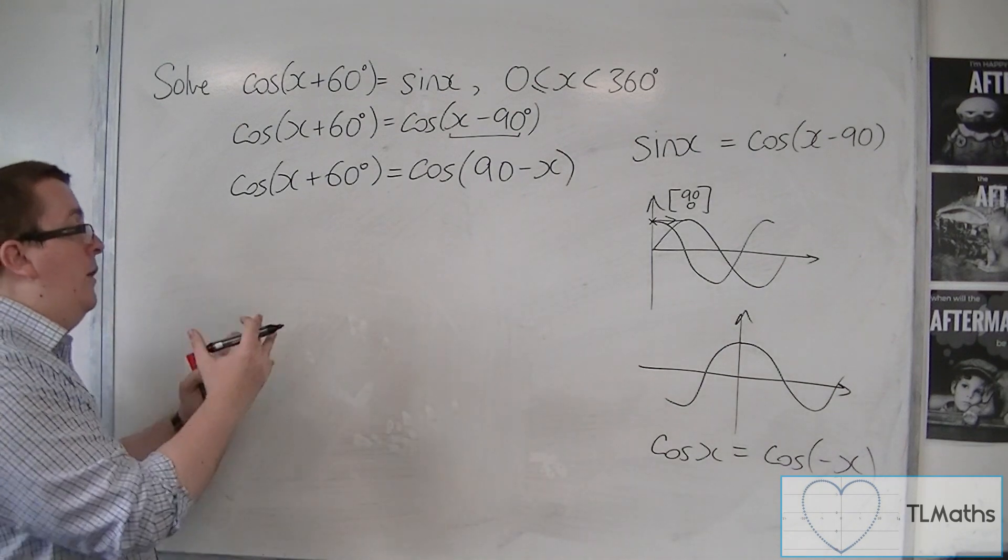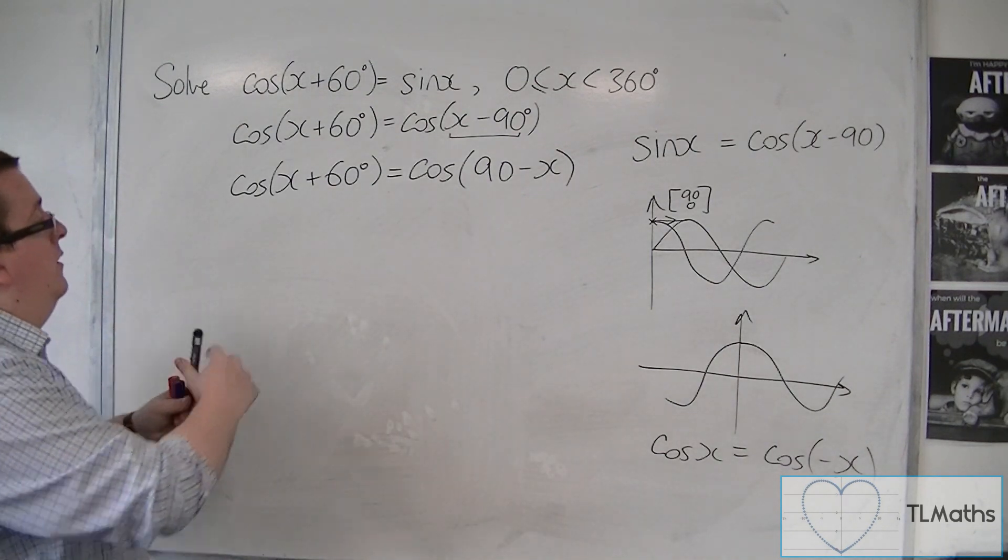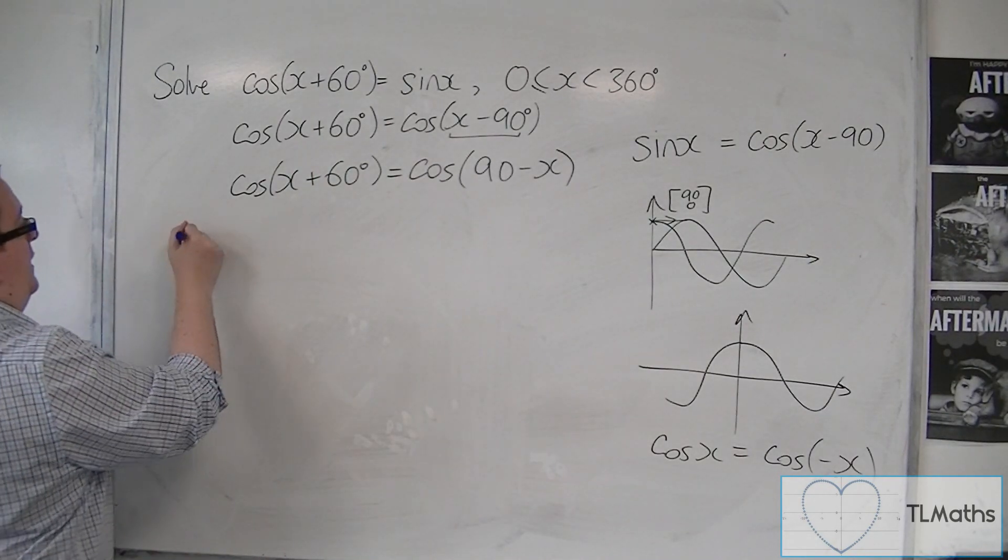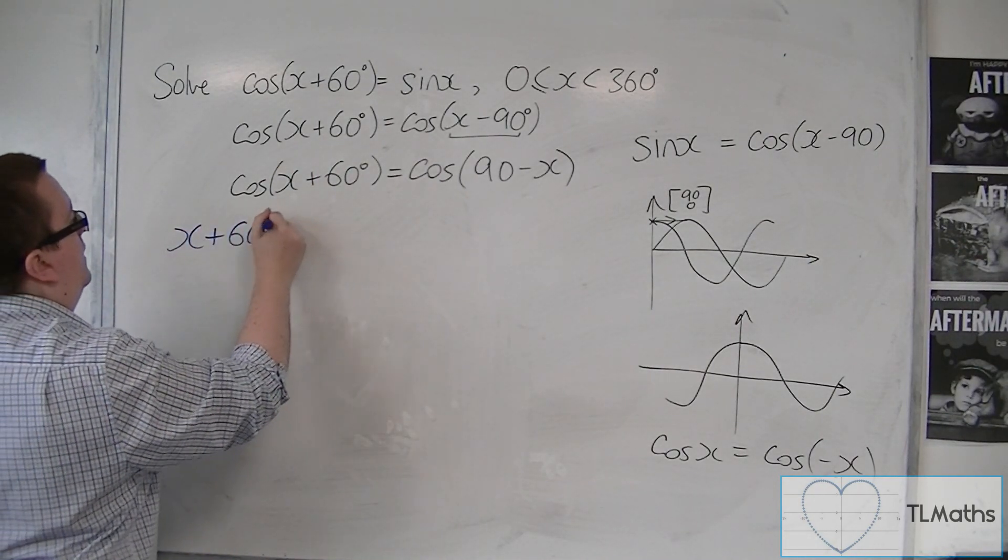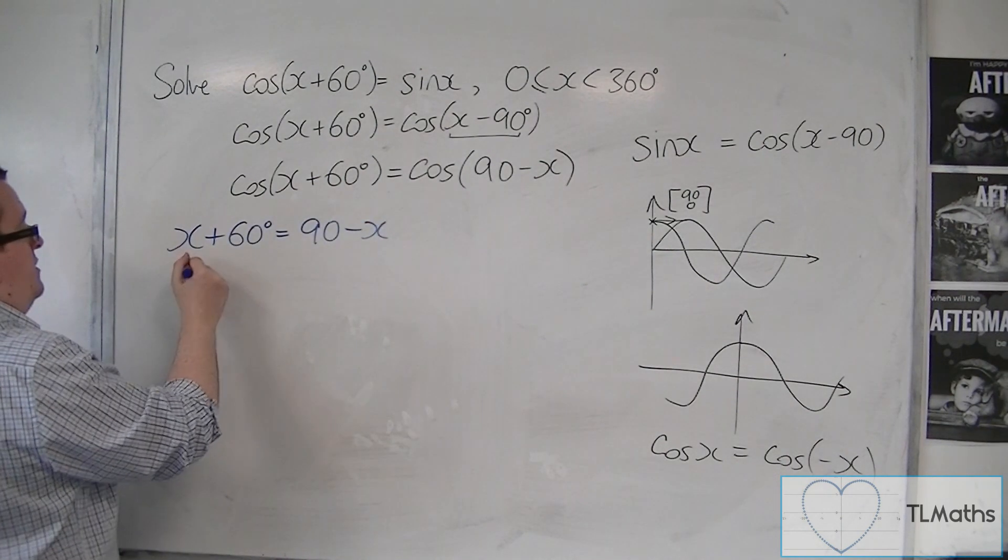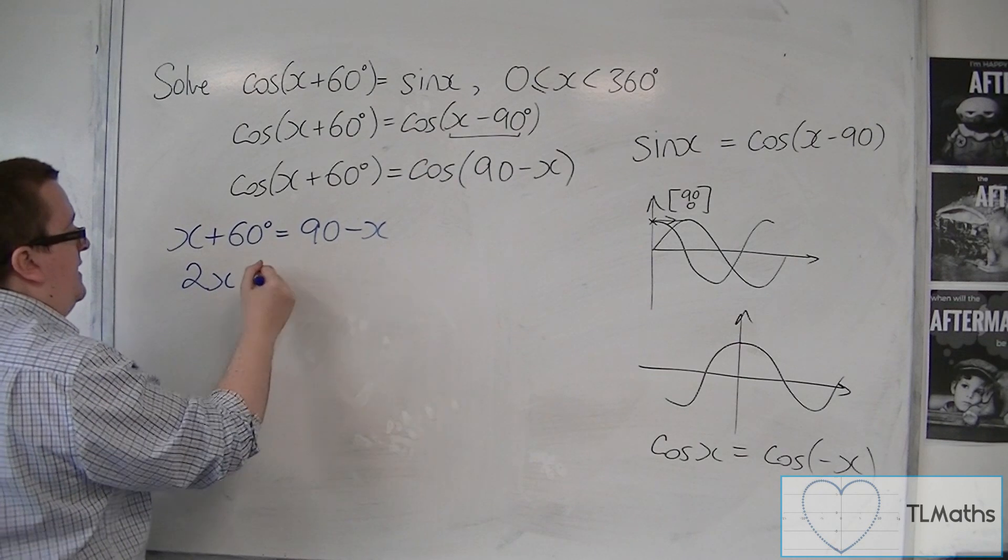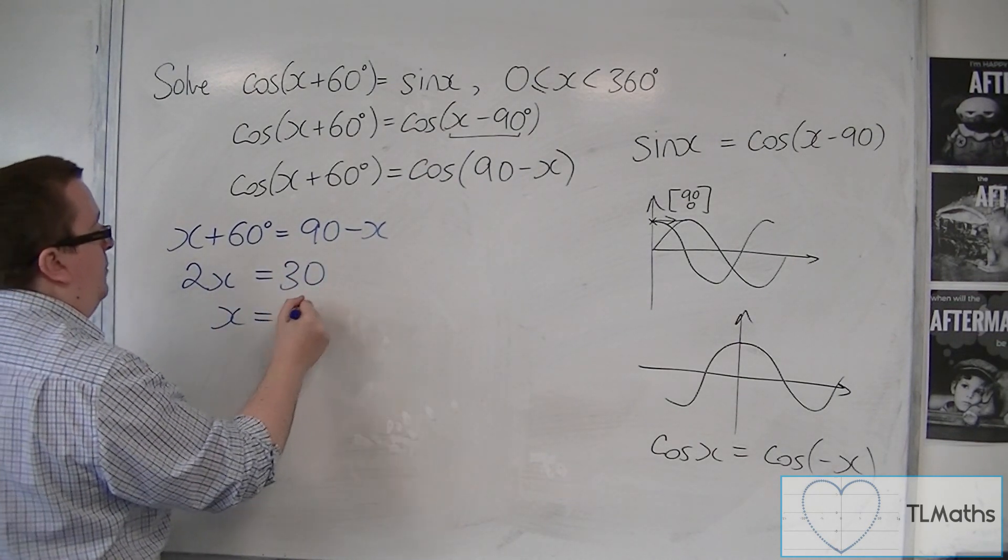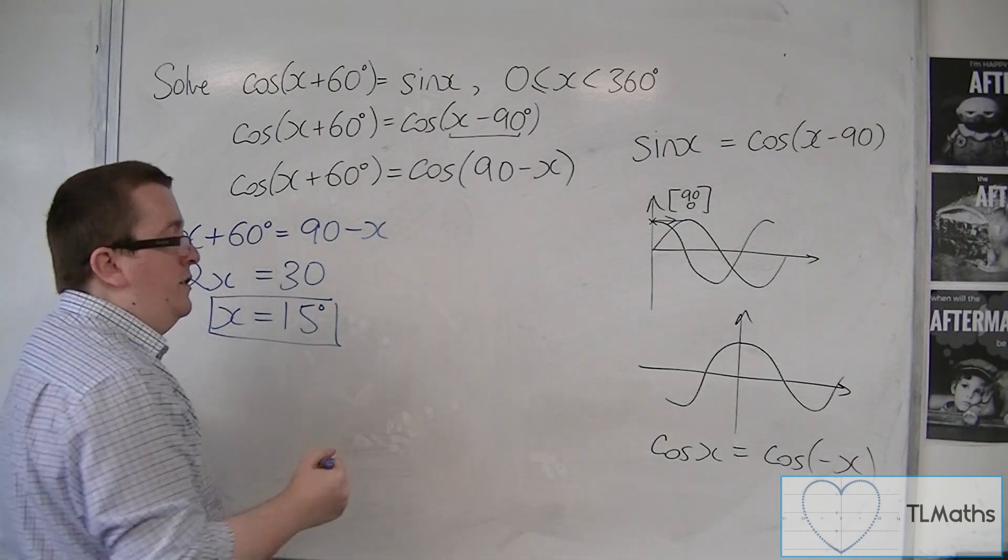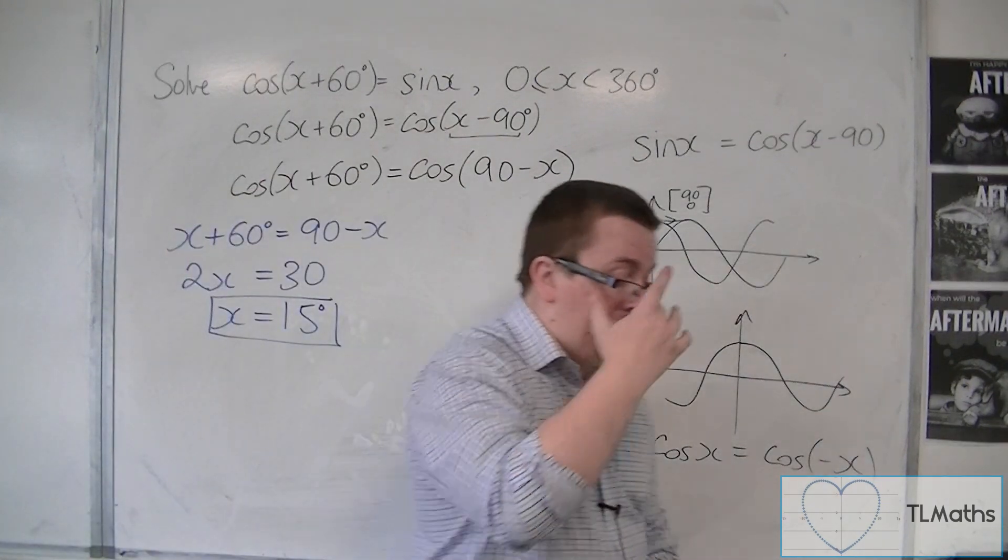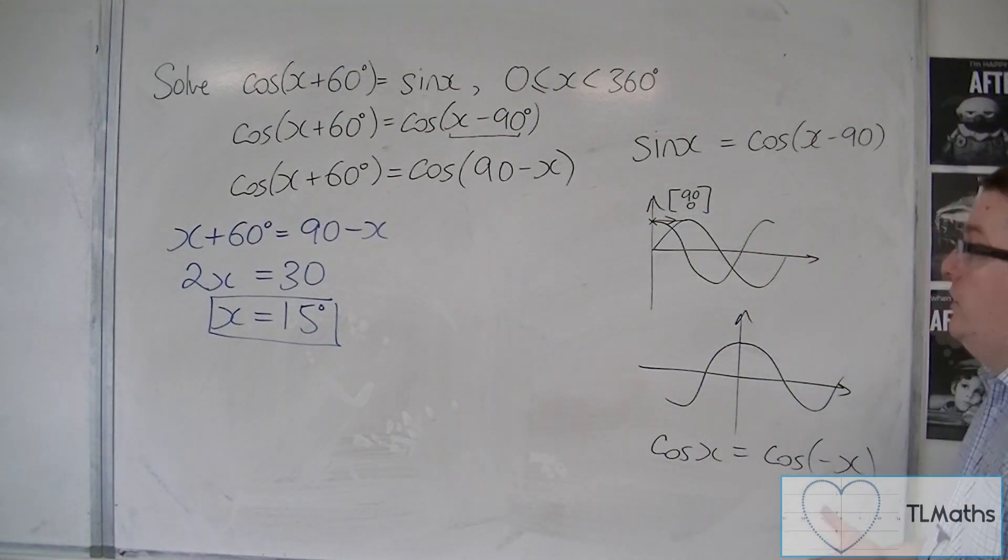So now I can put this bracket equal to that bracket, removing the cosines. I'd be left with x+60 is equal to 90-x. I can add x to both sides, take 60 from both sides, and then divide both sides by 2. And I get x is equal to 15 degrees. And that is one of the solutions. X is equal to 15 works.